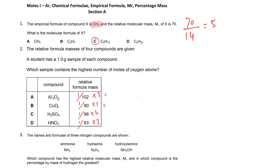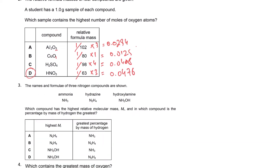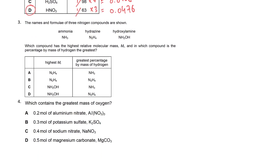Calculating on a calculator: the values are 0.0294, 0.0125, 0.0408, and 0.0476. The highest value is 0.0476, so that compound is our answer.